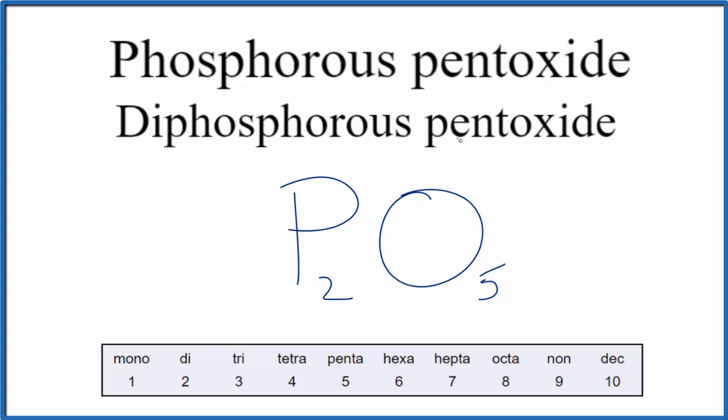So when chemists and scientists were studying this diphosphorous pentoxide, or you could call it phosphorous pentoxide, this is what they found. They found that in the molecule, there were 2 phosphorous atoms for every 5 oxygen atoms. That's the ratio.